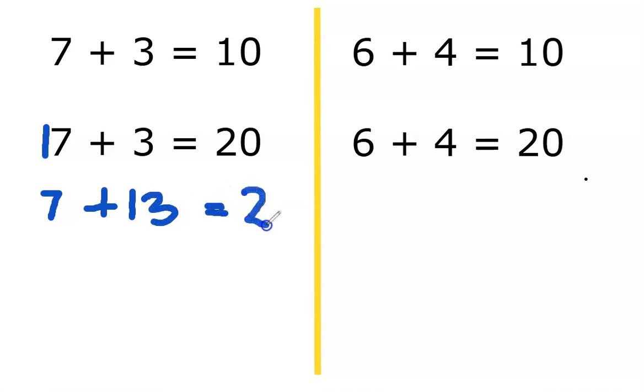Now, just by knowledge of our number bonds to 10. Now, we know that 6 plus 4 equals 10. How could we make this equal to 20?